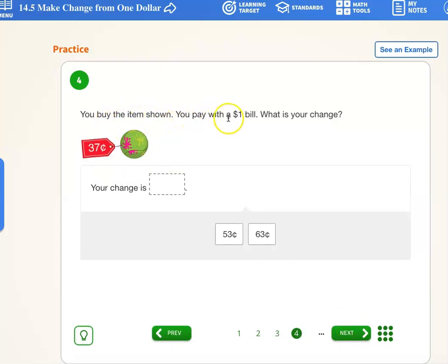You buy the item shown, you pay with a dollar. What is your change? Alright. So we have, we're paying with a dollar. One, zero, zero. And we take away 37 cents. Cents, 30, seven. We're taking away. Draw our line.